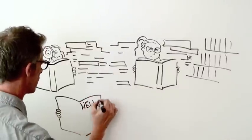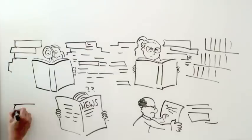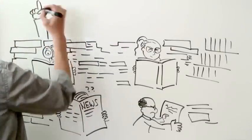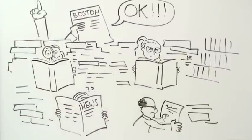A professor named Alan Walker-Reed researched OK for years and uncovered the true story. It begins in 1839 when a Boston newspaper editor jokingly used OK as an abbreviation for all correct.